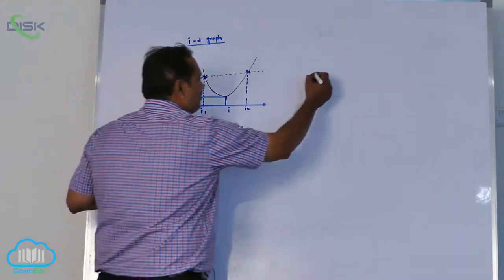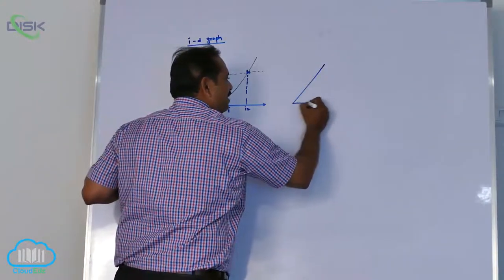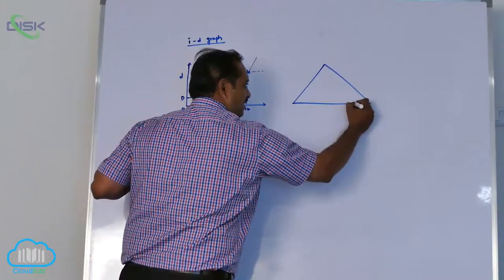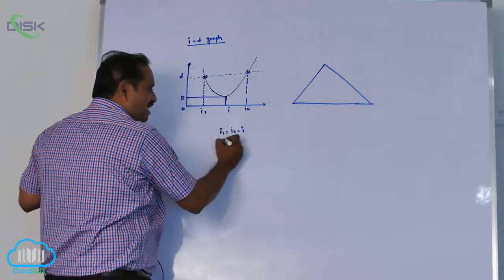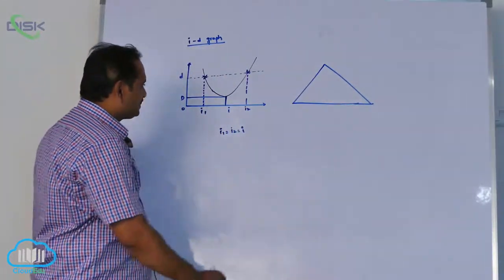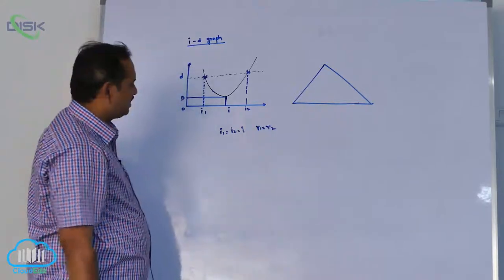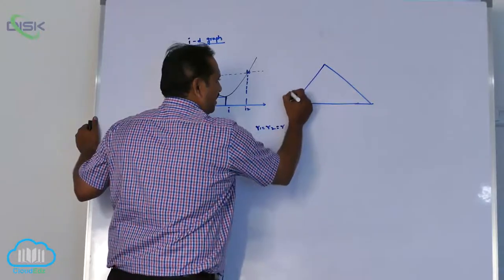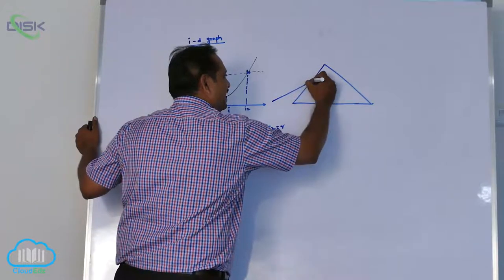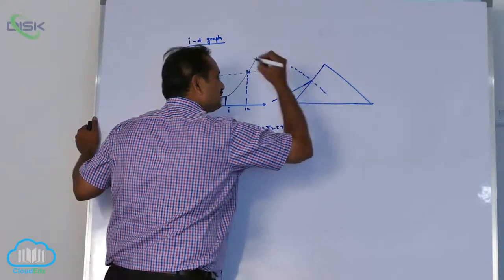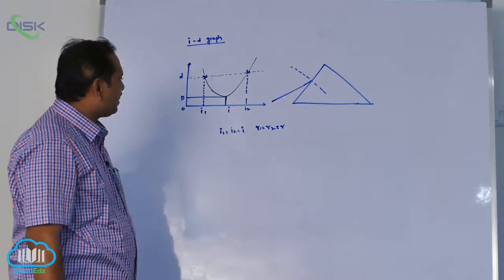Very important continuity: at minimum deviation, i1 equal to i2 equal to i, r1 is also equal to r2, that equal to r. Very important for practical purpose also, because you are having practical of i-d curve.